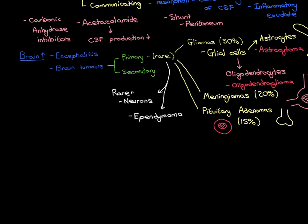Overall, we have seen that two things can cause an increase in the volume of brain tissue inside the skull and therefore lead to intracranial hypertension: encephalitis and brain tumours. Treatment for these causes involves treating the underlying disease — if you have an infection in the brain, treat the infection; if you have a brain tumour, address it with anti-cancer treatments. In the next video, we'll move on to how having too much blood inside the skull can lead to intracranial hypertension and cover the different examples of intracranial bleeds.